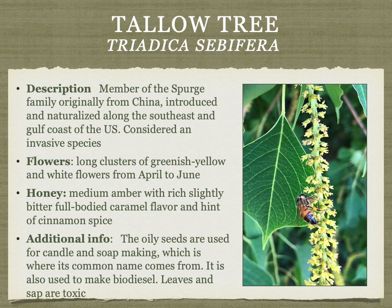Tallow tree is originally from China and unfortunately invasive, but like many invasive species, bees really like to work its flowers. The name comes from oily seeds used for candle and soap making. The honey is medium amber with a rich, slightly bitter, full-bodied caramel flavor and a hint of spice and cinnamon.